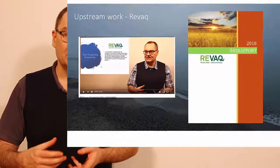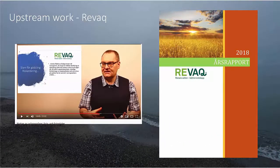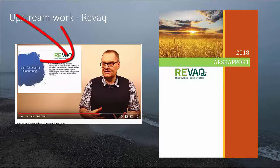One tool we have here in Sweden is REVAK. REVAK is focused on getting a control system so that the sludge produced in the wastewater treatment plant can be allowed to be used as fertilizer on farming land. This is one tool for upstream work. I've put a link to a video I made on the REVAK system that goes into a little more detail — if you want, you can have a look at that on the YouTube channel.